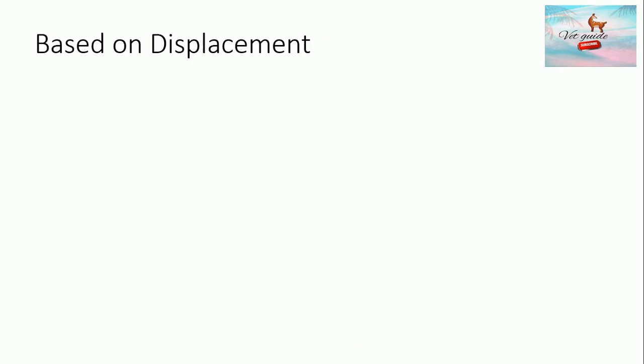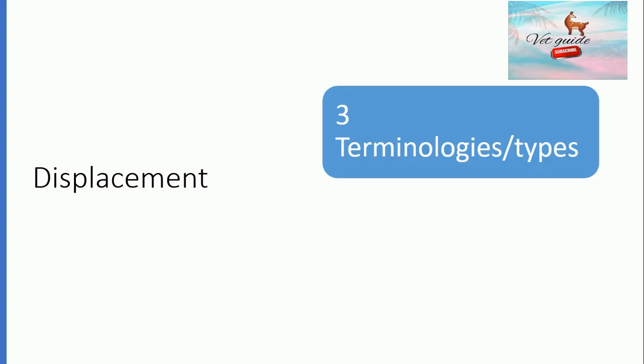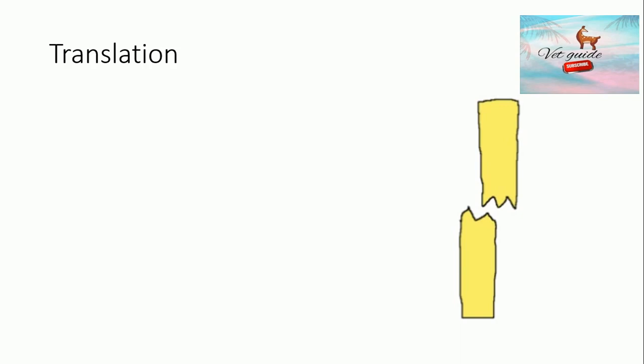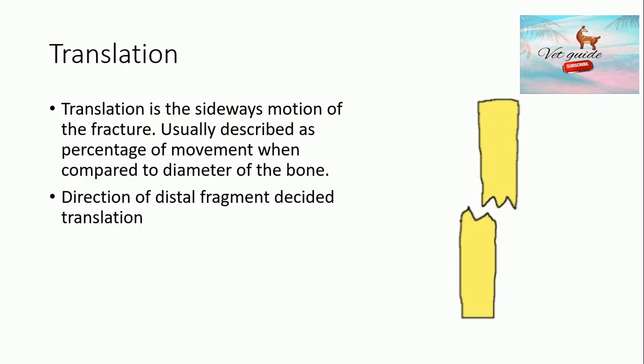Looking at the classification of fracture based on displacement, a fractured bone might be displaced or non-displaced. Displacement fractures can be of three types: translation, angulation, and shortening. Translation is the sideways motion of the fracture, usually described as the percentage of movement when compared to the diameter of the bone. The direction of the distal fragment decides the translation severity.